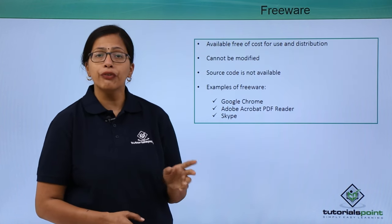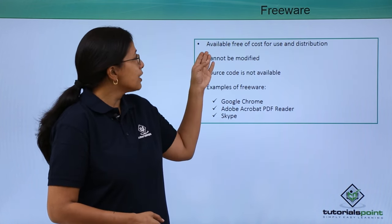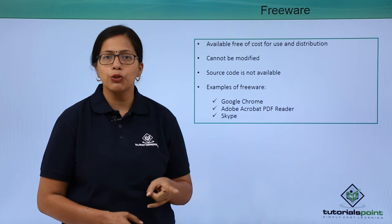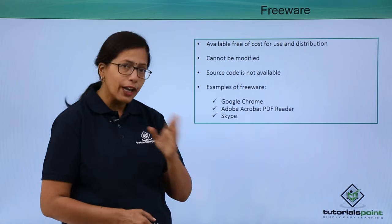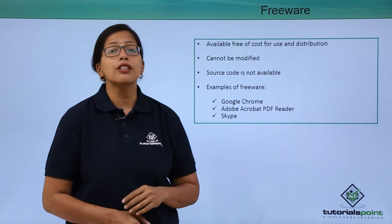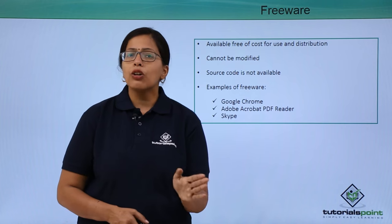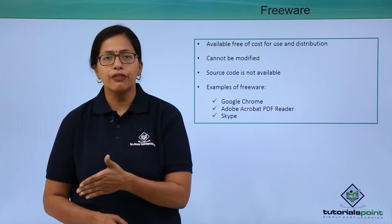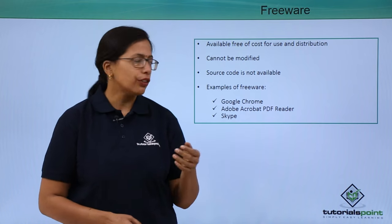The first type is freeware. It is available free of cost for use and distribution, but it cannot be modified because its source code is not available. It is still called open source software because you do not have to pay for it.